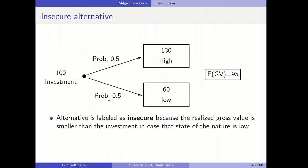Now let's look at the insecure alternative. The bank also invests 100 into this project: 96 euros from depositors and 4 euros from equity. With a probability of 50%, the project ends up in the high state of nature with a reflux of 130. With a probability of 50%, the project ends up in the low state of nature with a reflux of 60. The expected gross value is 95. This investment is labeled insecure because when the low state of nature materializes, the depositors cannot get back their initial investment, so there is some risk that depositors will lose money.